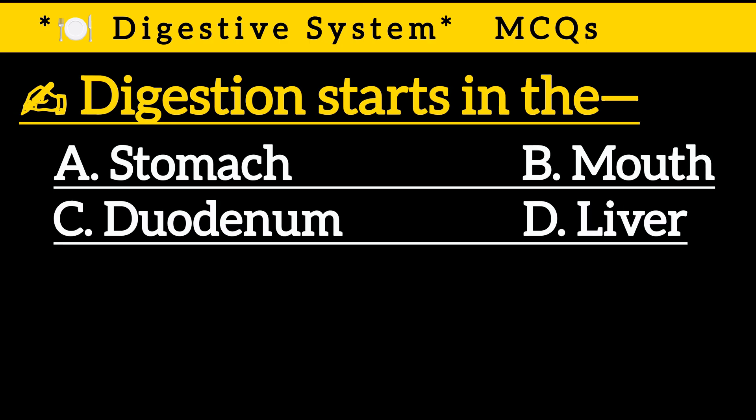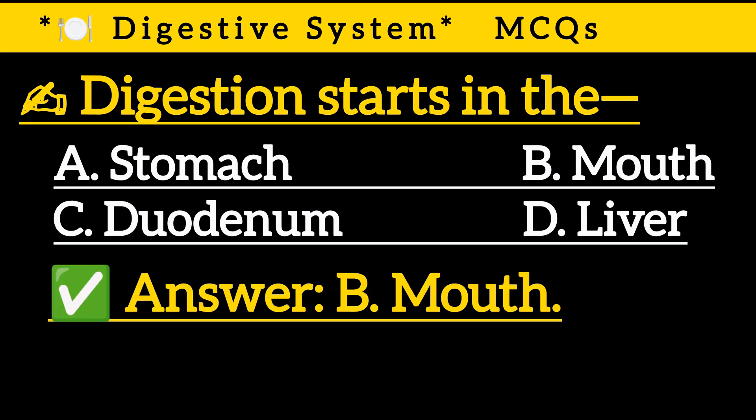Question 2: Digestion starts in the — Option A: Stomach, Option B: Mouth, Option C: Duodenum, Option D: Liver. Correct answer is Option B: Mouth.